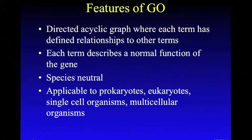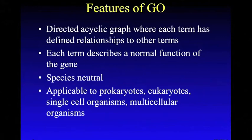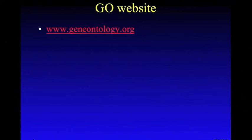GO terms form a directed acyclic graph, where each term has defined relationships to other terms. Each term describes a normal function of that gene — so oncogenesis is not a GO term because cancer is not a normal product of the gene. GO is species-neutral, so a term can be used for any organism; it's applicable to prokaryotes, eukaryotes, single-cell, and multicellular organisms. There are online tools where you can find more about the gene ontology of your genes, including the gene ontology website at www.geneontology.org.